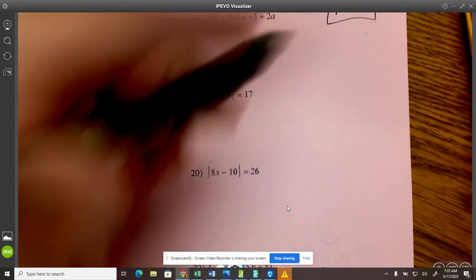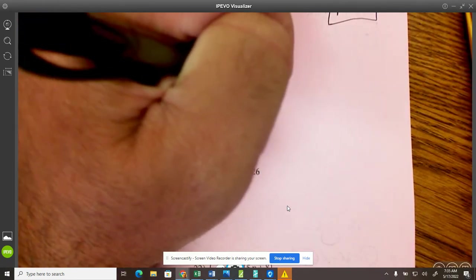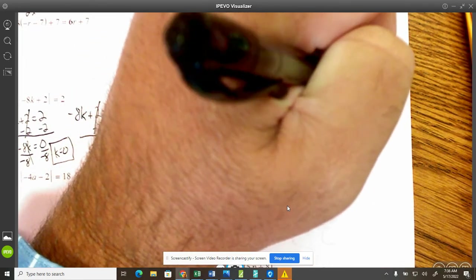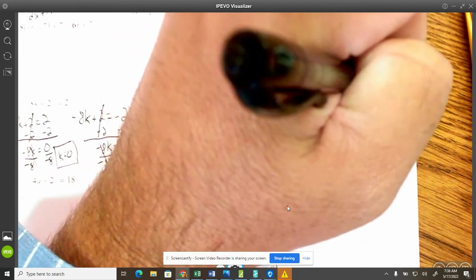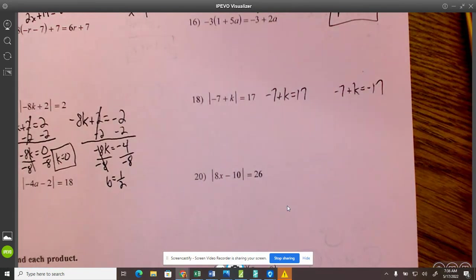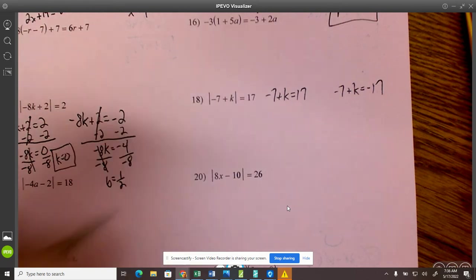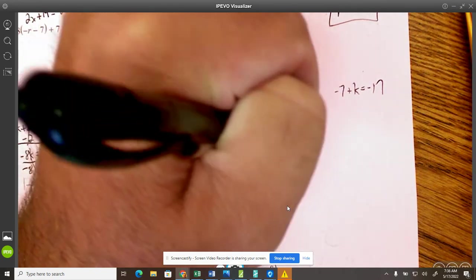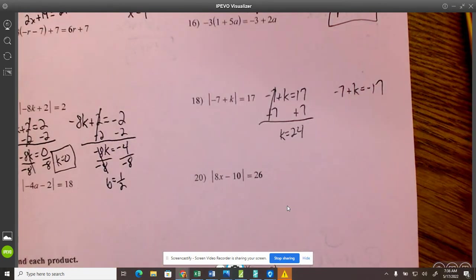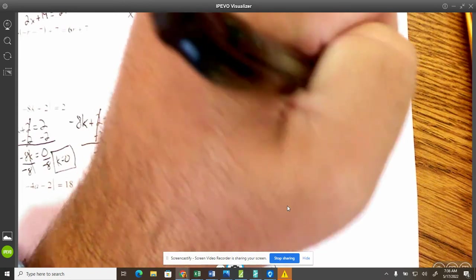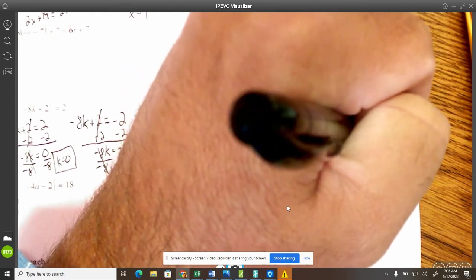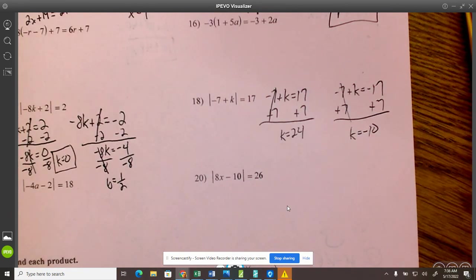So same thing here. Negative 7 plus K equals 17. Negative 7 plus K equals negative 17. So don't make this hard. It's relatively easy because now all I'm going to do is add 7 to both sides. K equals 24. Add 7 to both sides. K equals negative 10. Boom. Done.